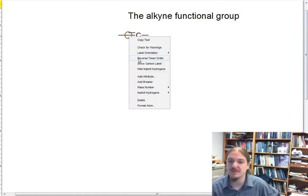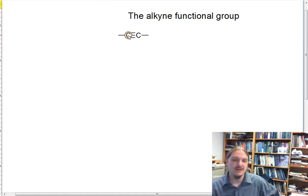Let's show the carbon labels here so we can see a carbon triple bonded to another carbon atom. In this video we're going to explore the bonding in the alkyne functional group and its geometry and some examples of alkynes that are present in drug-like compounds.